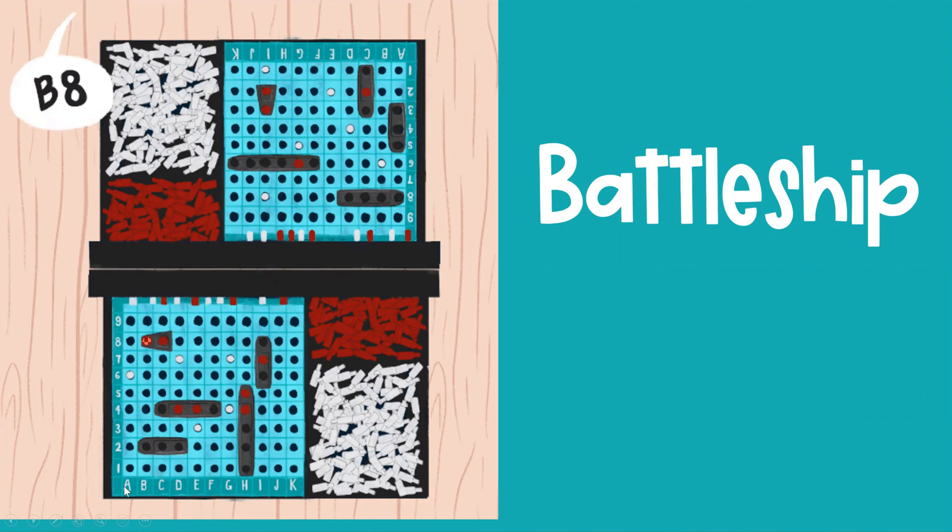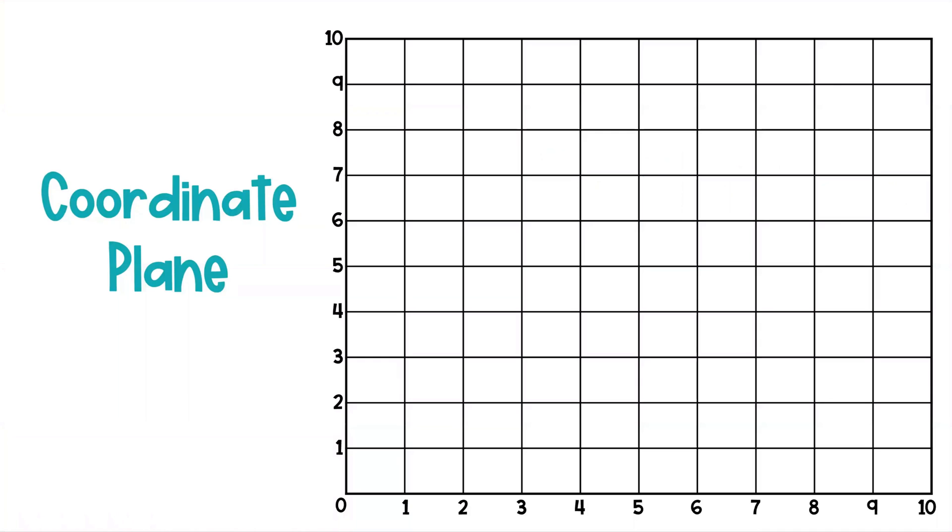You have these series of, in Battleship, there's letters that go this way and numbers that go this way. So as your opponent calls out a series of letters and numbers as their guess, they can find or guess where your ships are on your board. So we're going to use that same idea and talk about coordinate graphs or another word for it is a coordinate plane.